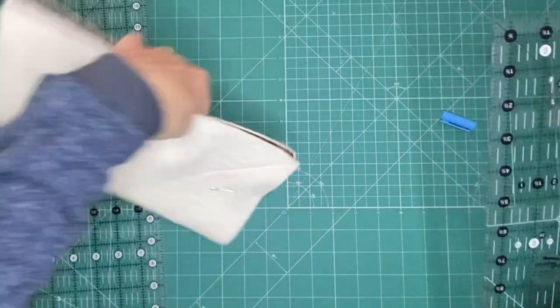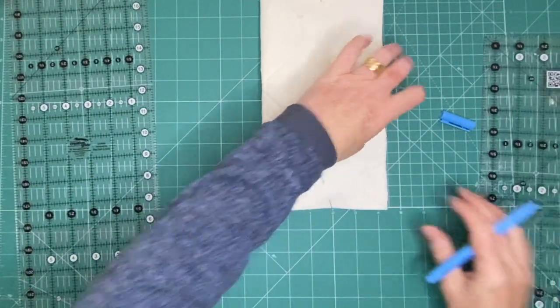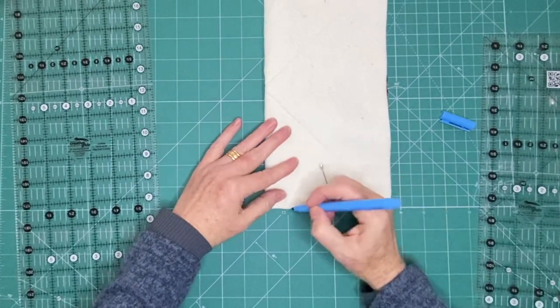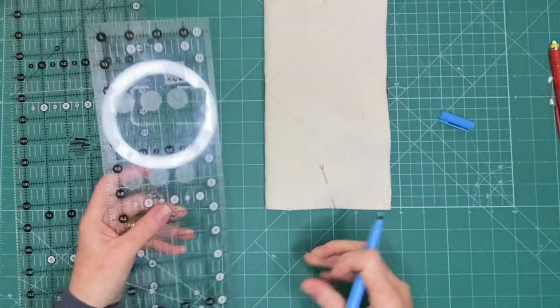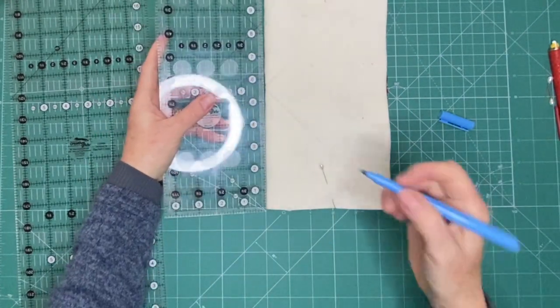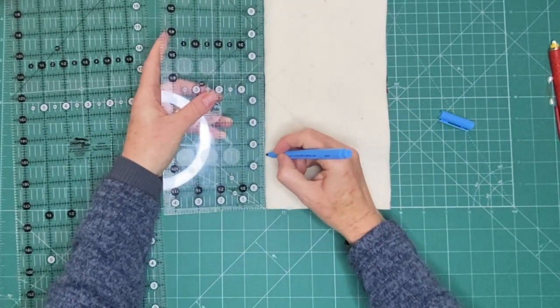We'll stitch two darts at a time. First of all marking two, going to your sewing machine and stitching them, and then we'll come back and mark the other two before stitching them as well and then repeating it for the other square.